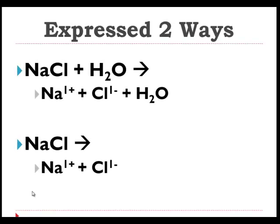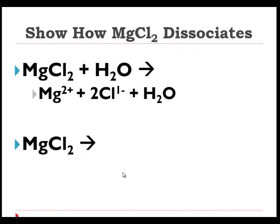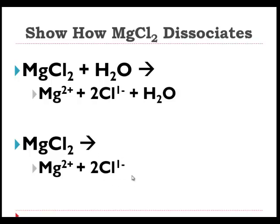We looked at how we express that and how we can write it, not so much in picture form. Remember, the water is always there, but to clean it up, we could drop the water and just think of the different ions. This is more of an entry-level PowerPoint. If we look at something like magnesium chloride, it too is an ionic compound — metal with a non-metal — it too is going to dissociate. The subscript of 2 for the chlorine tells me that for every 1 mole of MgCl₂, I'm going to get 1 mole of magnesium ions and 2 moles of chloride ions, now in its ionic form.